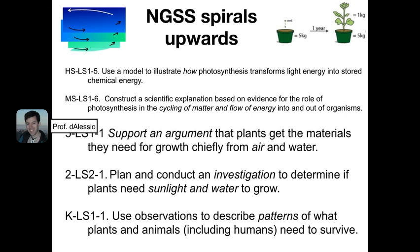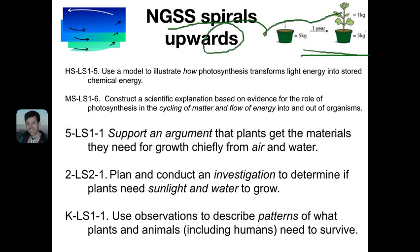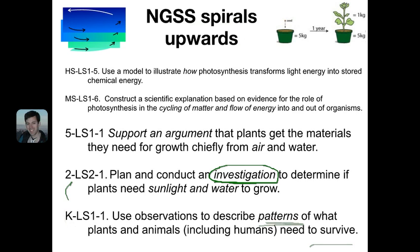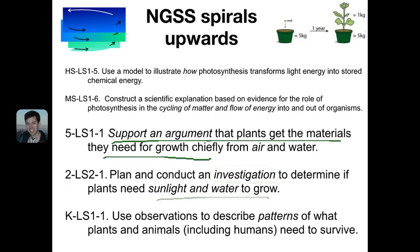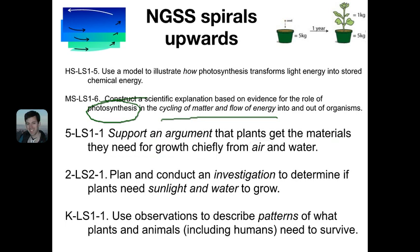Here's an example of how that developmental progression works as NGSS spirals upward in the study of plants. In kindergarten, students use observations to describe patterns of what plants and animals need to survive. In second grade, they conduct investigations to determine if plants need sunlight and water to grow. By fifth grade, they support an argument that plants get the material they need chiefly from air and water. In middle school, they look at the cycling of matter and flow of energy in photosynthesis at the organism level. By high school, they explore the mechanism of how photosynthesis transforms light energy into stored chemical energy.